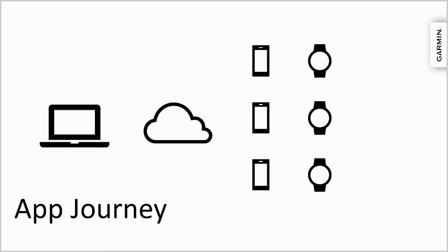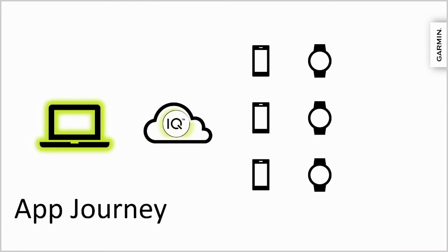Let's follow the journey of a ConnectIQ app. First, apps are created with the ConnectIQ SDK written in the Monkey C programming language — the language you didn't know you already knew. Beneath a deceptively simple syntax is access to a whole range of on-device APIs. When your app is ready, it is uploaded to the ConnectIQ store, where millions of users can find it, download it to their ConnectIQ compatible device, and use it in their lives. The ConnectIQ store hosts tens of thousands of apps developed by thousands of developers just like you.